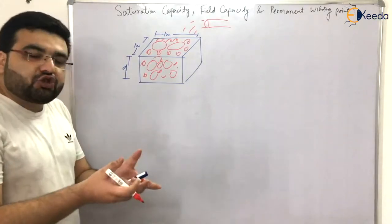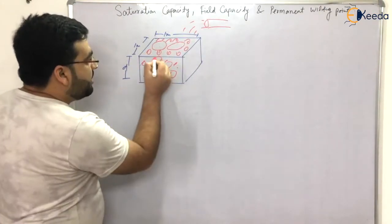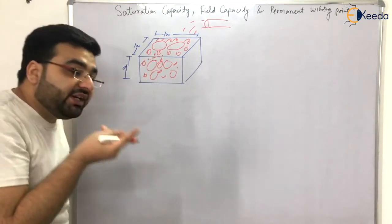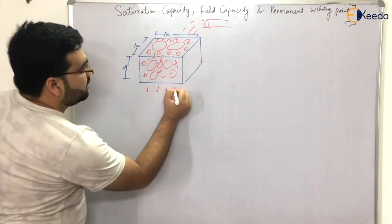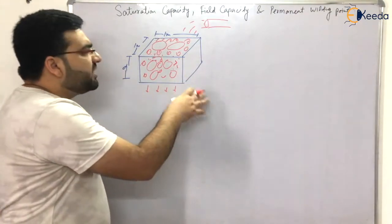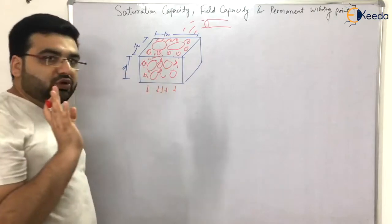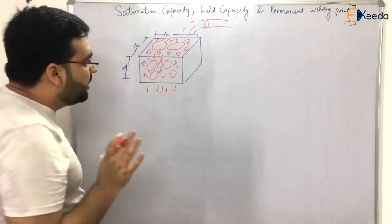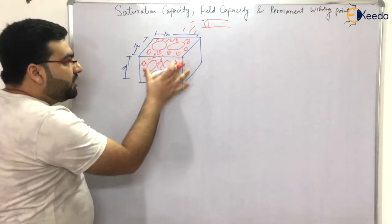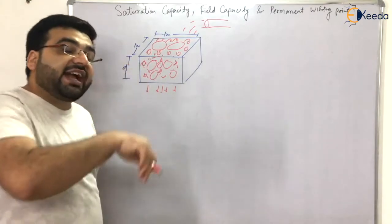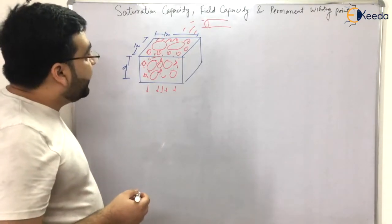Even as a kid, I noticed that if you pour water on soil, some water is retained inside the pores, and some water comes down. Some water will be trapped inside the pores — that is the water holding capacity — and some water will come down. The water held by the soil sample will be inside the voids.